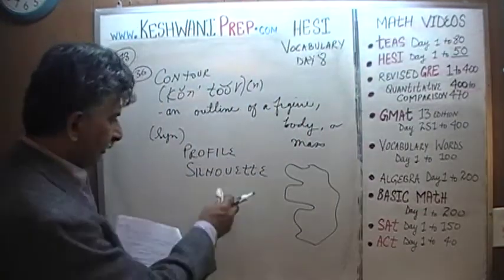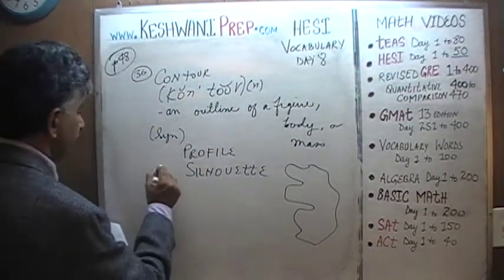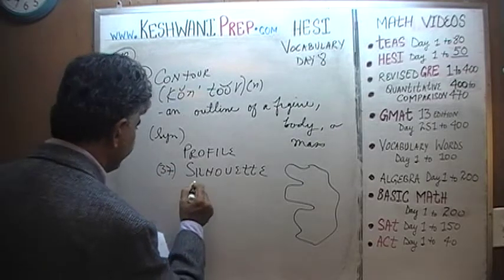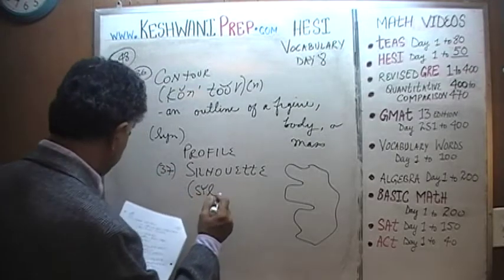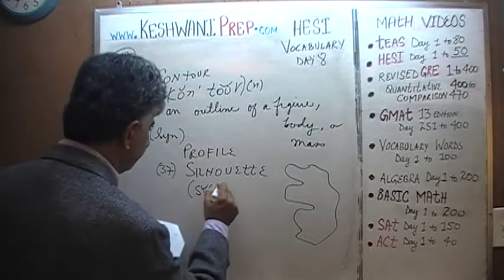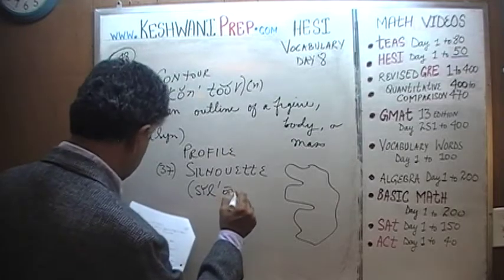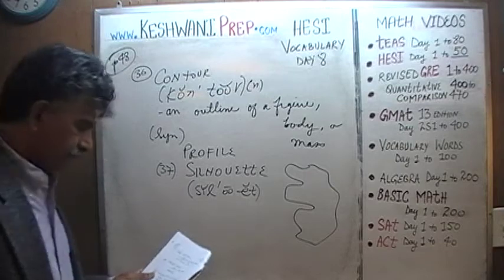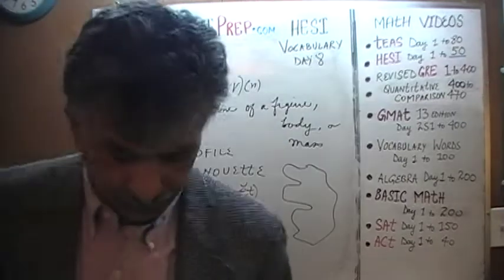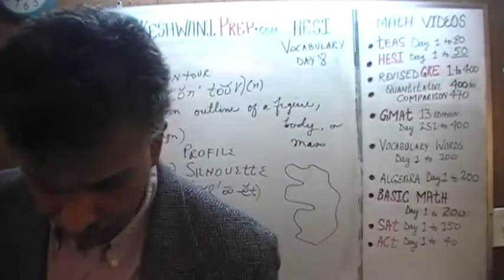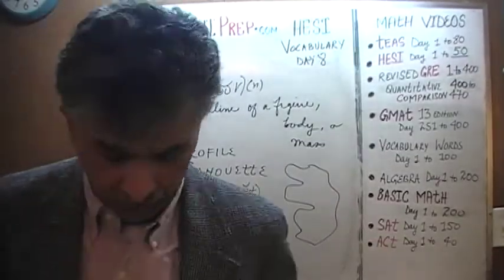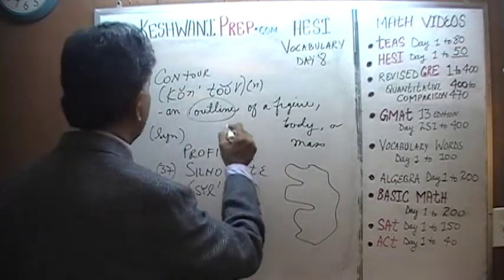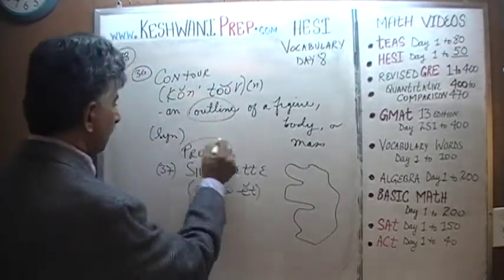Let's learn this one, shall we? Silhouette — let's learn it. Number 37: silhouette. But there's not really much to learn here — we just talked about it. That's what it is: it's an outline, profile, or a shape. An outline, profile, or a shape.